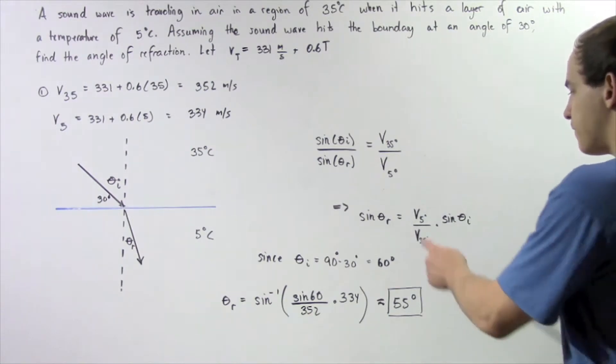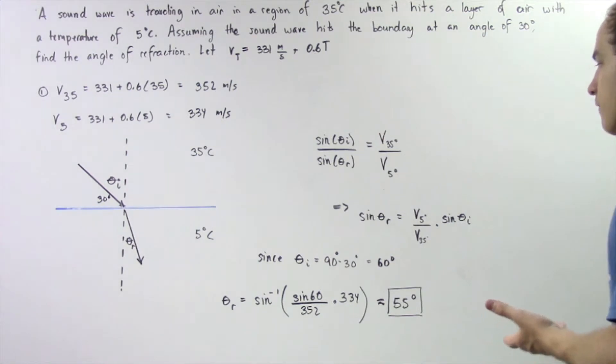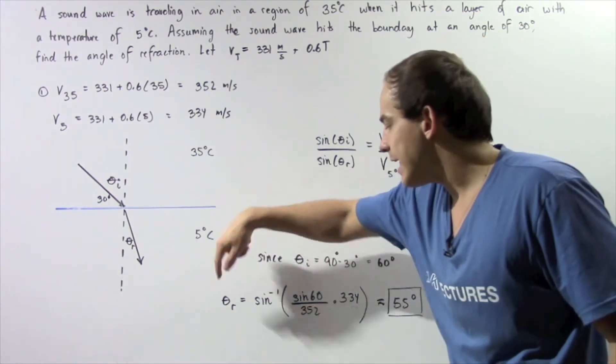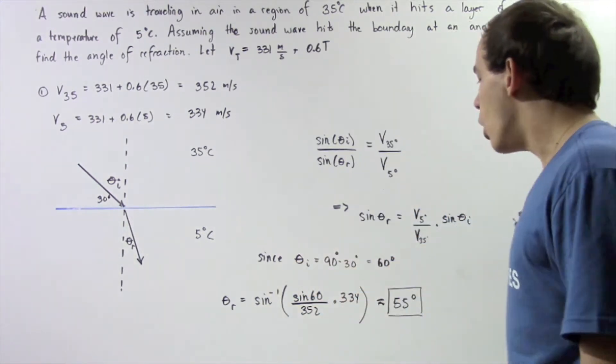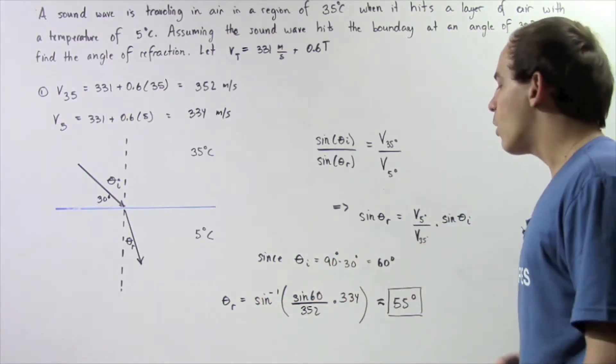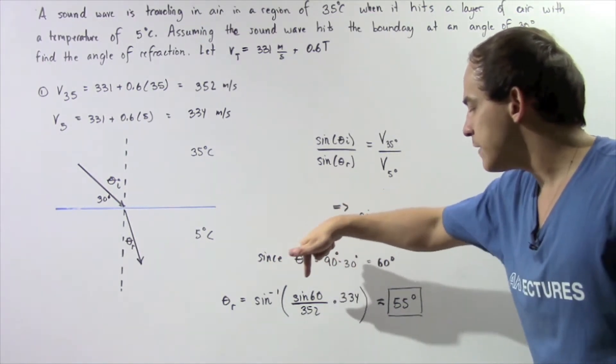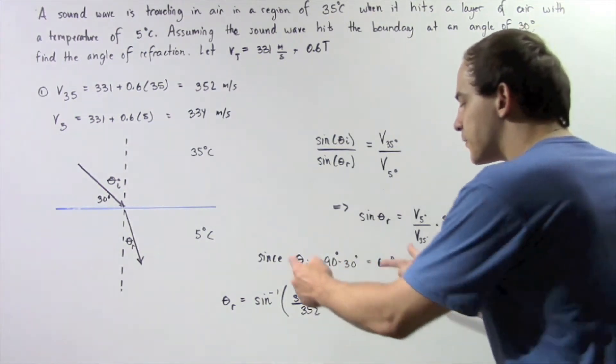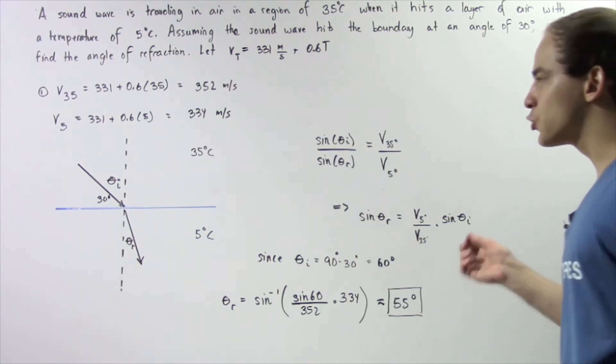So that means if we find out what this quantity is and we take the inverse of the sine function of both sides, we see that the angle of refraction is equal to our sine inverse multiplied by—where the sine inverse is simply our inverse of the sine function. So sine 60 divided by 352 multiplied by 334, we take the inverse sine of that quantity and we get approximately 52 degrees.